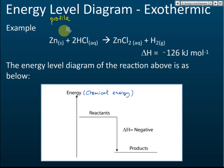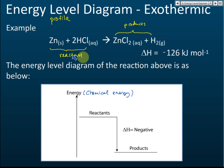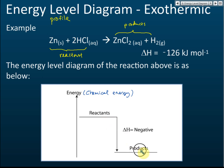In a chemical reaction, before it reacts, this is called the reactant, and after the reaction, this is called the product. First we show the energy for the reactants, then the energy for the products. In exothermic reactions, the energy of the products is lower than the energy of the reactants.